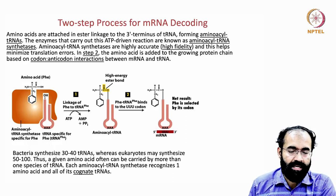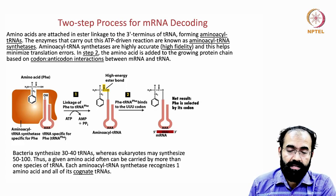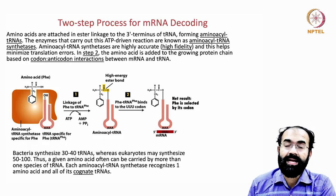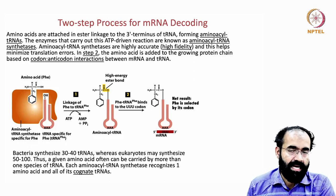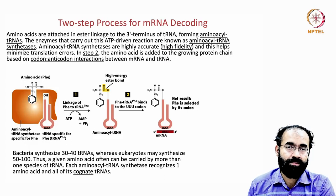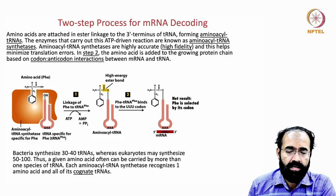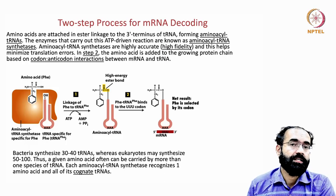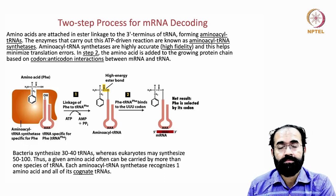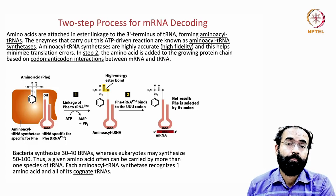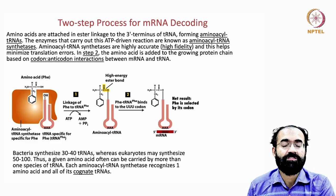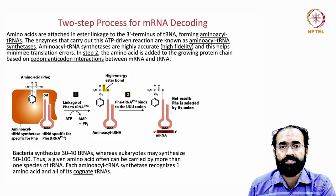Protein translation is essentially mRNA decoding, which occurs in two steps. In step one, amino acids are attached in ester linkage to the 3' terminus of tRNA, forming aminoacyl-tRNAs. The enzymes that carry out this ATP-driven reaction are known as aminoacyl-tRNA synthetases. These enzymes must be highly accurate — they cannot randomly attach an amino acid to any tRNA, because the amino acid must correspond to the tRNA's anticodon to ensure correct delivery during protein synthesis. This accuracy is called high fidelity.